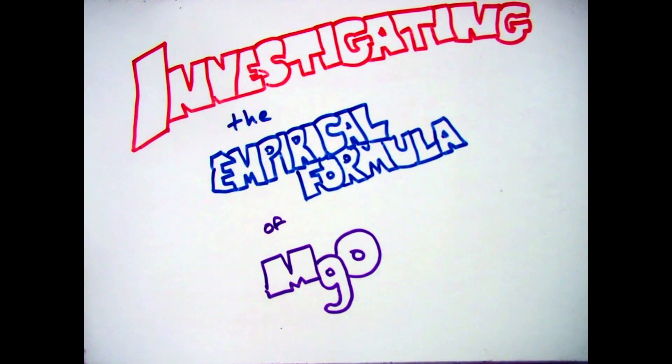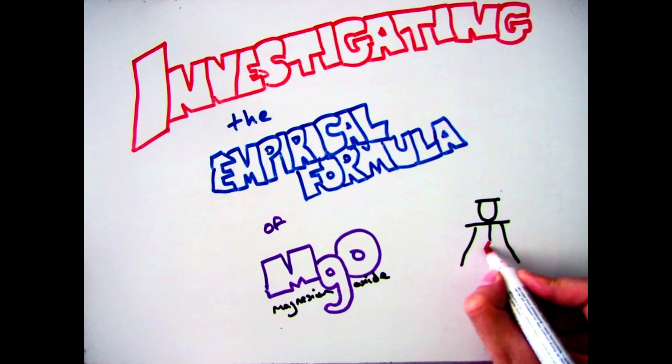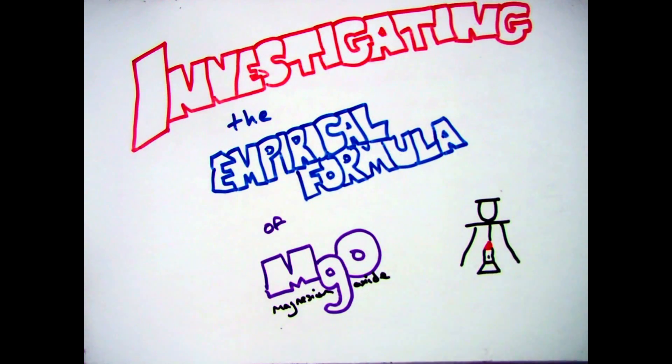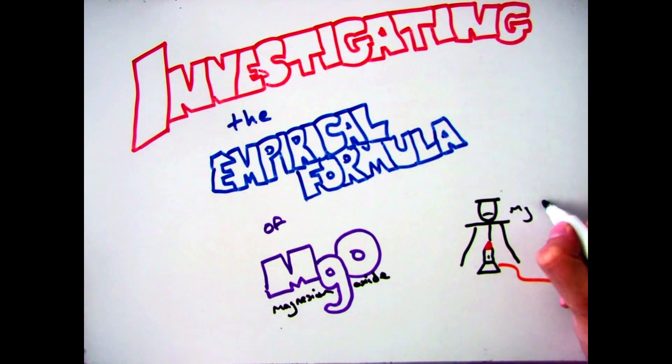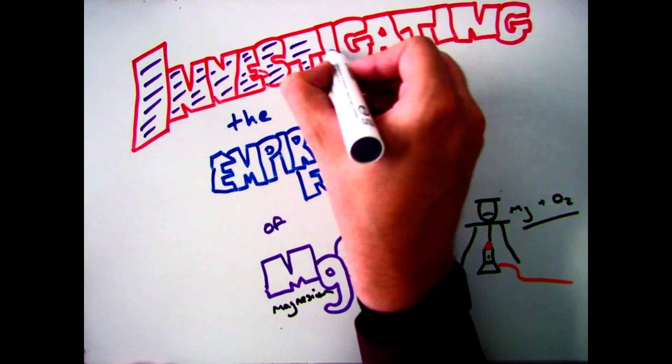Hi guys and welcome to this investigation where we're going to be looking at how you can work out the empirical formula of magnesium oxide with a chemical reaction.